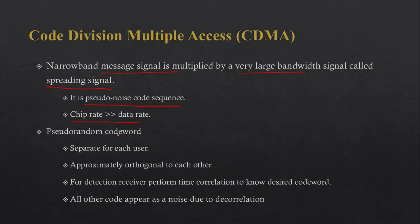This pseudo-random code word has some special properties. First, it will be separate for each user — that means it will be unique for each user — so that the user can be identified easily. Another property is that it will be approximately orthogonal to each other. Orthogonal means 90 degrees separated from each other.